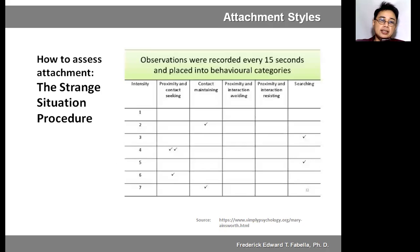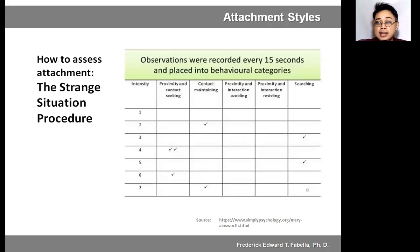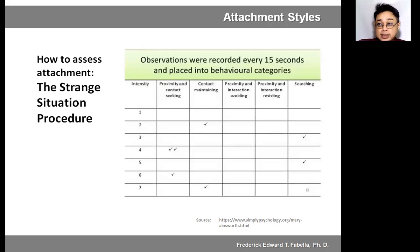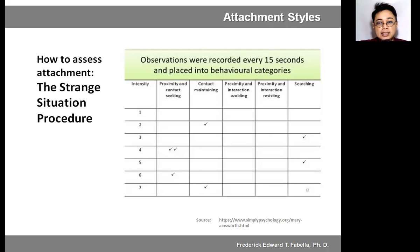So how did they assess the behavior of the infant? Looking at the table, the behaviors observed were: proximity and contact seeking, contact maintaining, proximity and interaction resisting, and searching. These behaviors were rated, observed, and recorded every 15 seconds — that's how the strange situation was assessed.